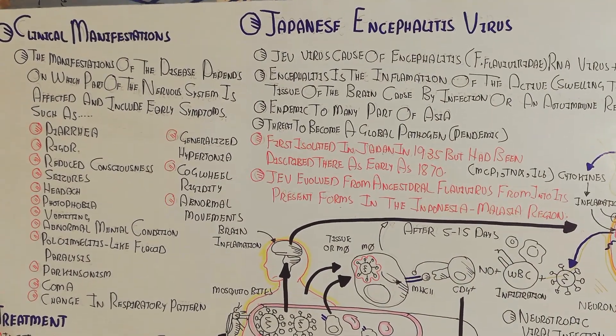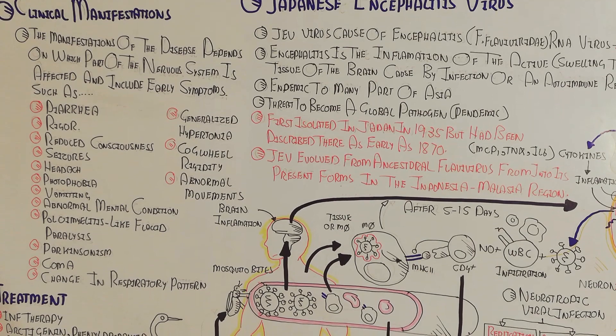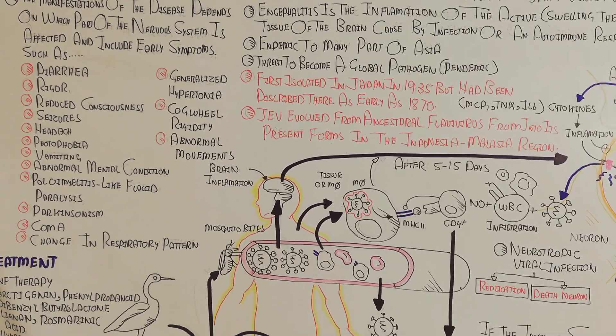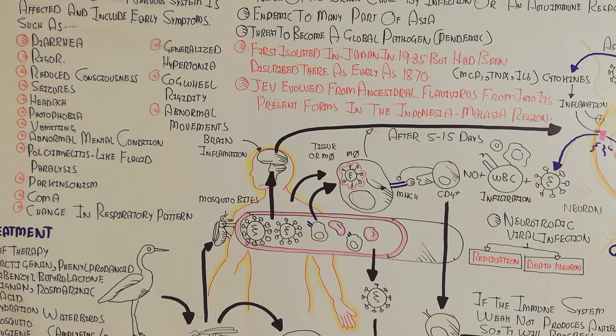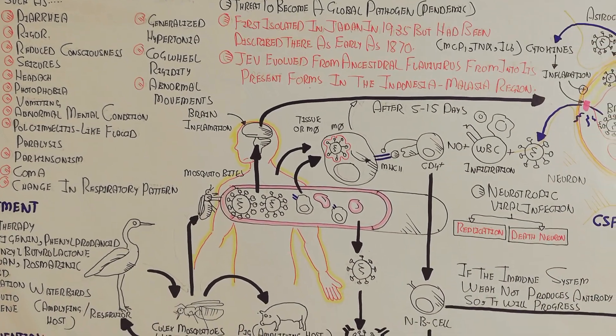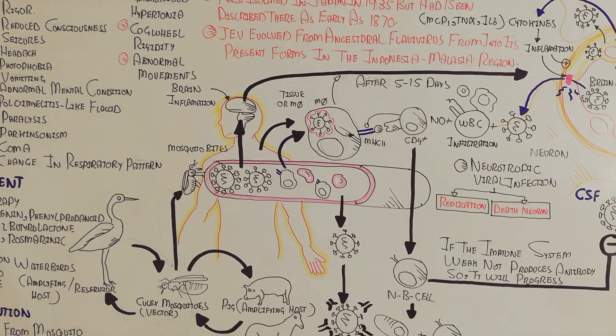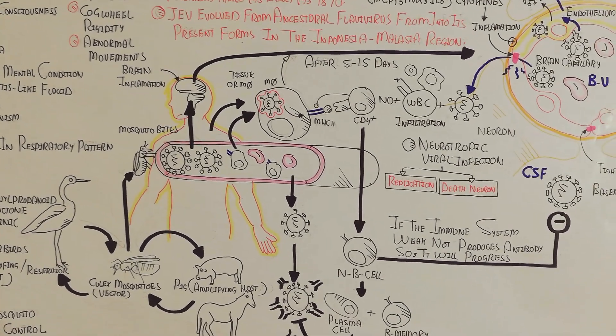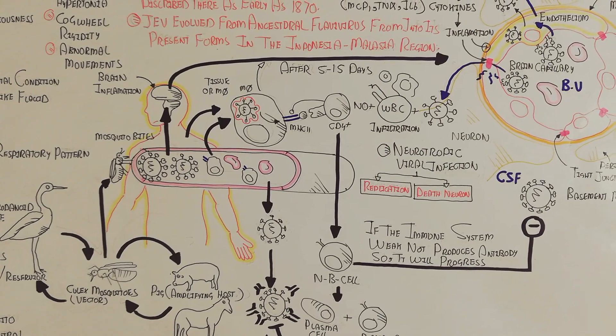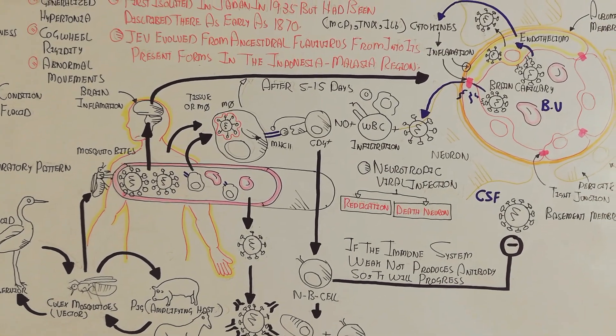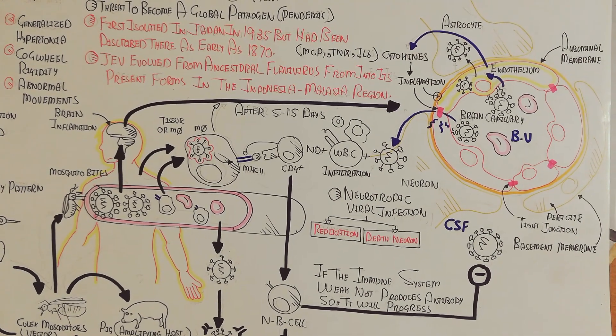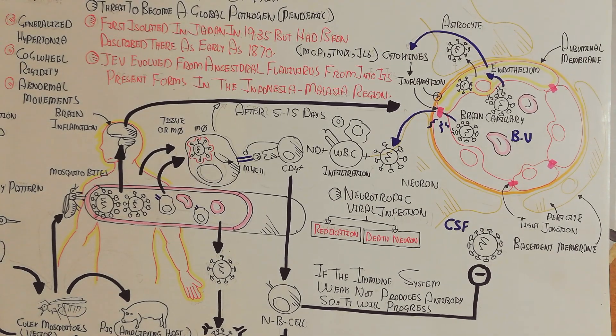This is the Japanese encephalitis virus, JEV, we have discussed in this video—the JEV infection, pathophysiology, clinical manifestation, treatment, prevention, and diagnosis. I hope this makes sense. If you like my video, please subscribe, like, and share, and give comments below for better understanding. Remember, this could be our next pandemic. Thanks for watching, see you in the next video, bye.